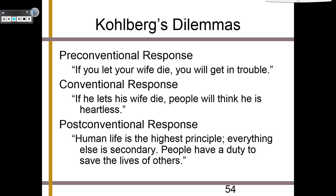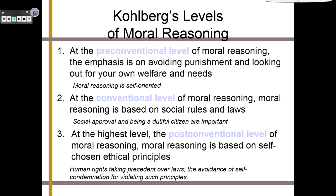At the pre-conventional level of moral reasoning, the emphasis is on avoiding punishment and looking out for your own welfare and needs — moral reasoning is selfish and self-oriented. At the conventional level, moral reasoning is based on social rules and laws; social approval and being a good citizen are most important. At the highest level, the post-conventional level, moral reasoning is based on self-chosen ethical principles — human rights take precedent over laws, and you also avoid self-condemnation for violating any of these rules.